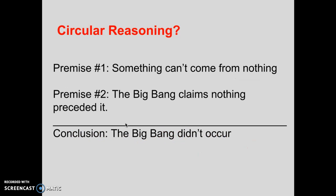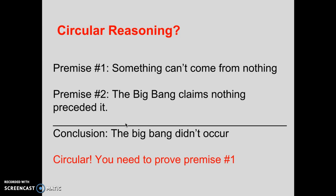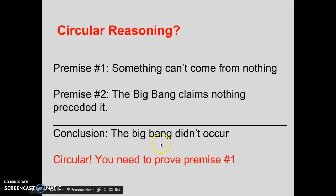Premise one: something can't come from nothing. Premise two: the Big Bang claims nothing preceded it — meaning nothing came before it. Therefore, the Big Bang didn't occur. Yes, this too is circular. You need to prove premise one. 'Something can't come from nothing' is every bit as controversial as 'the Big Bang didn't occur.' Because if the Big Bang is claiming to be the first big event in the history of our universe, then the argument that something can't come from nothing is essentially the argument that the Big Bang didn't occur. You've got to back this argument up — you're begging the question once again.